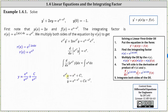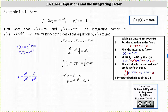The next step is to solve for y by dividing both sides by e to the power of x squared, as shown on the right. This gives us y equals e to the x divided by e to the x squared, plus c divided by e to the x squared. Simplifying, e to the x divided by e to the x squared equals e to the power of the quantity x minus x squared, and c divided by e to the x squared equals c times e to the power of negative x squared.